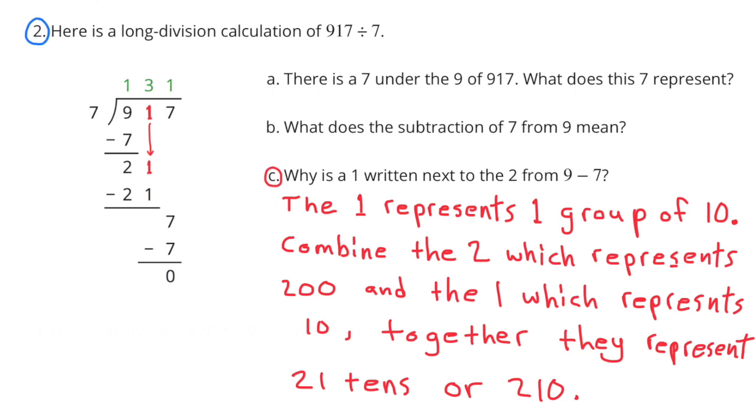C, Why is a 1 written next to the 2, between the 9 and the 7? The 1 represents 1 group of 10. Combine the 2, which represents 200, and the 1, which represents 10. Together they represent 21 tens, or 210.